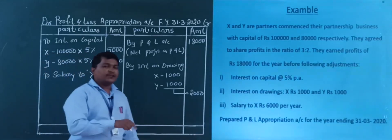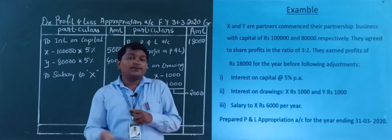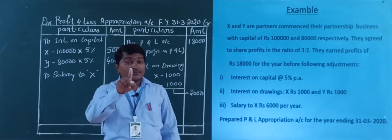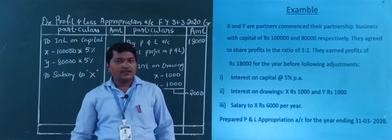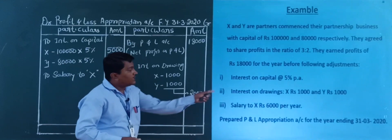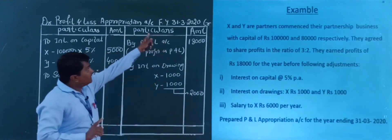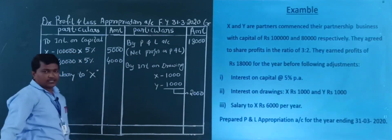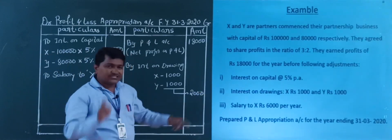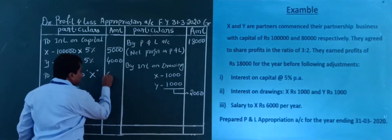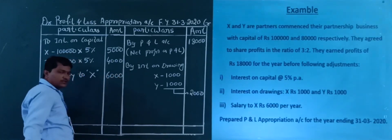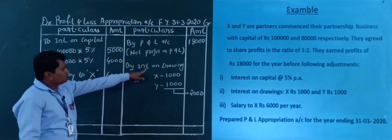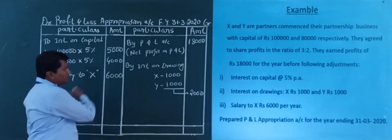Next is the salary to X. The salary can be given per annum or per month. If it is given per month, you multiply by 12 to get the annual figure. Here the salary amount is rupees 6,000 per year directly. So we record interest on capital, interest on drawings, and salary.